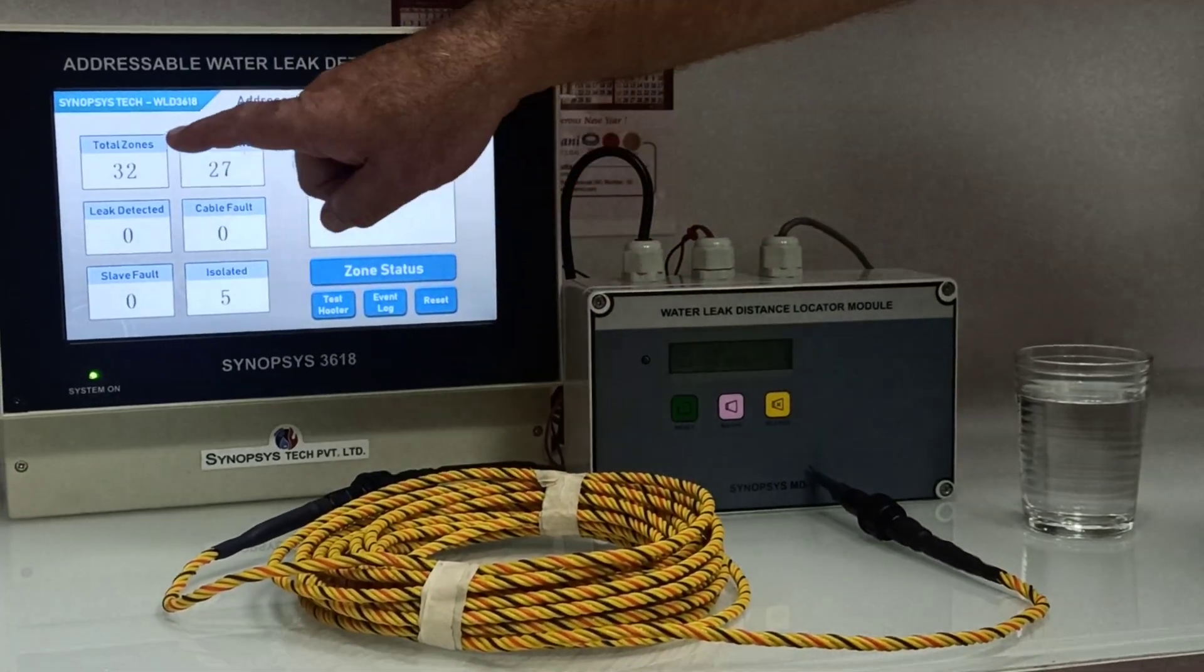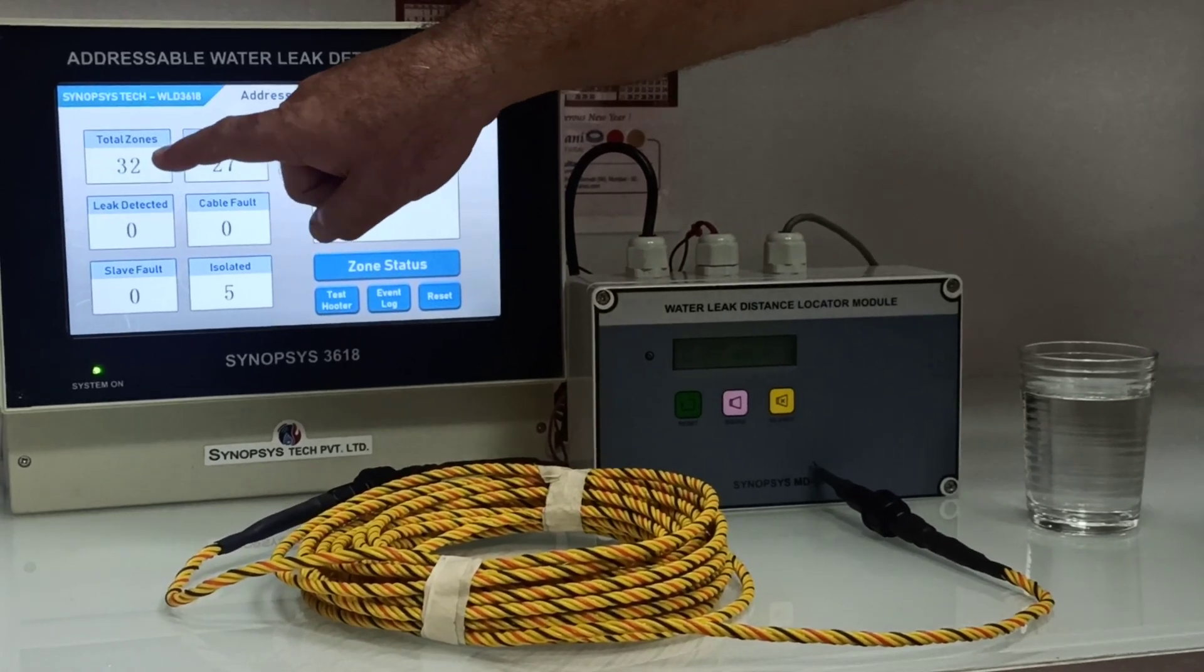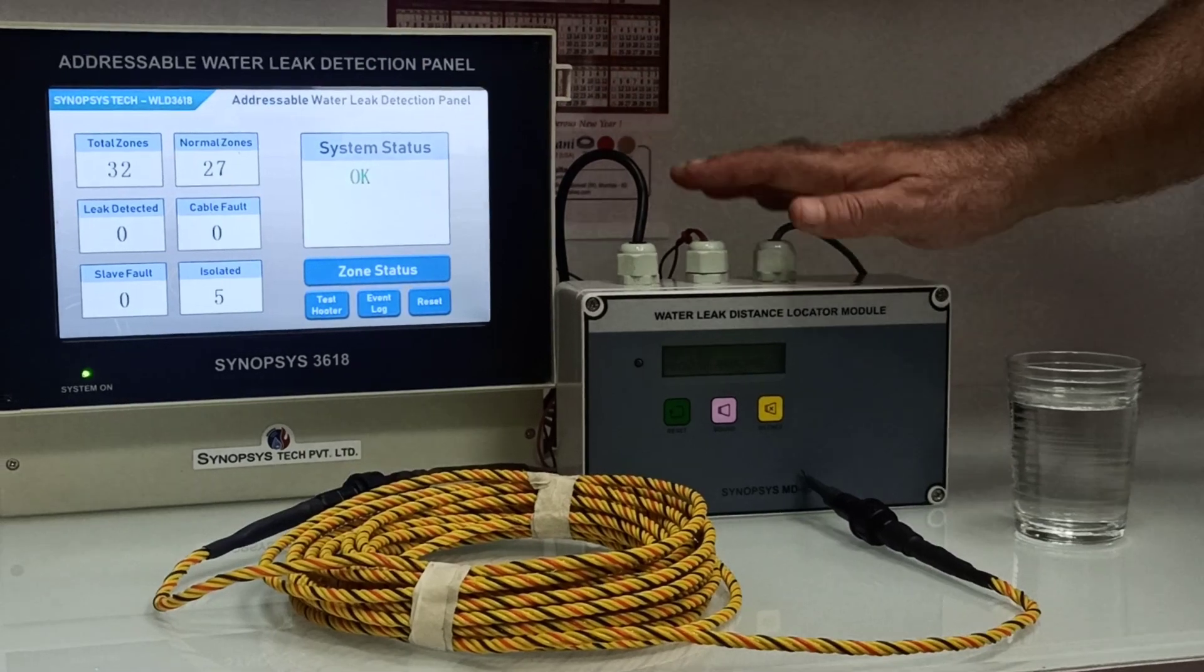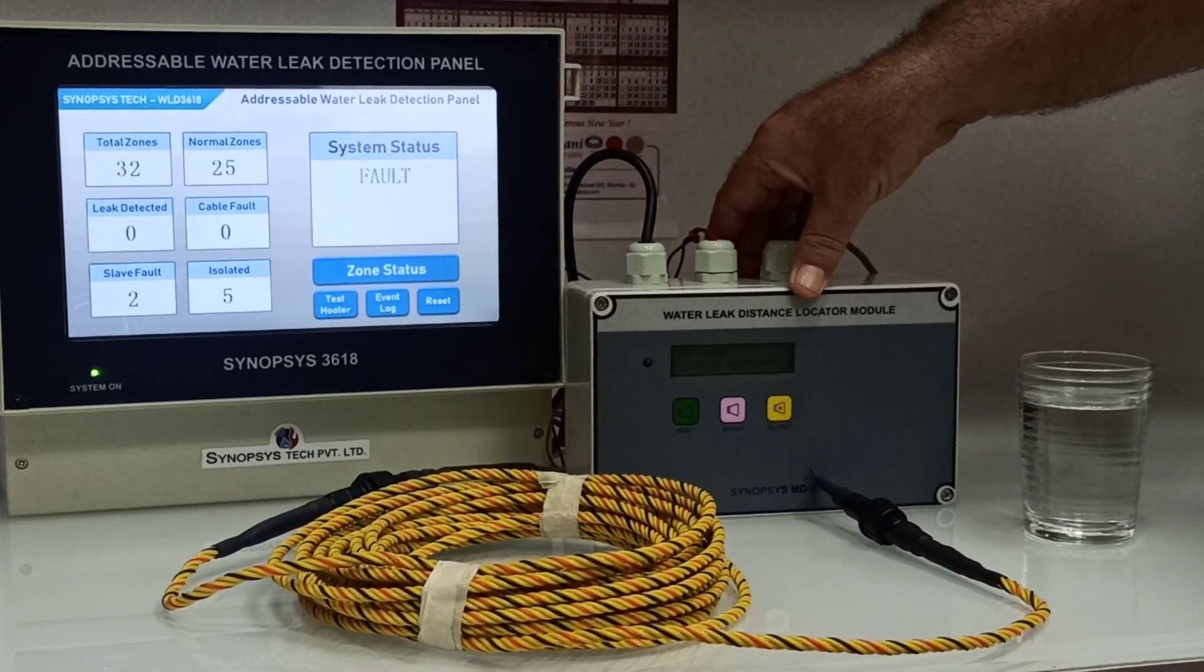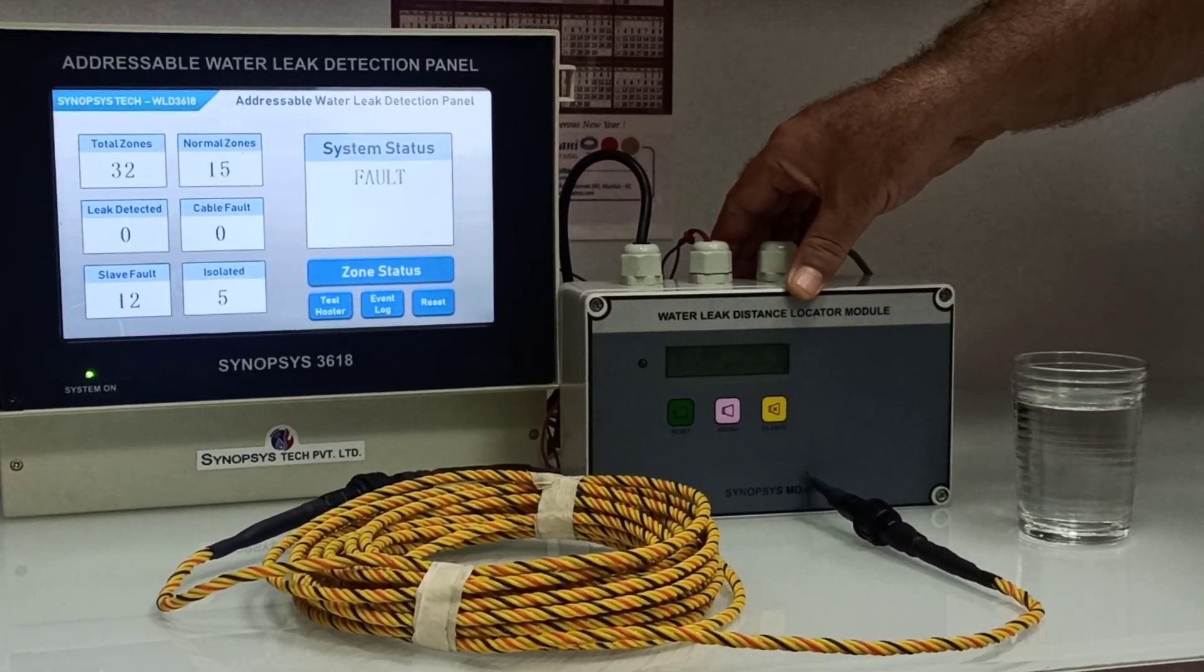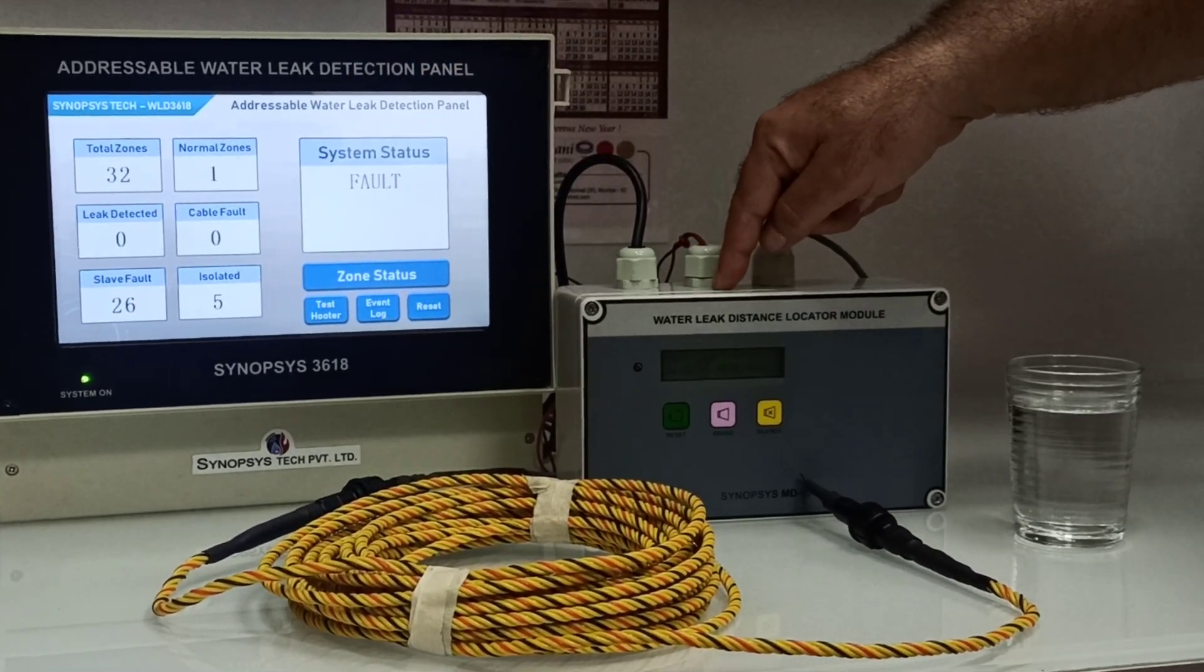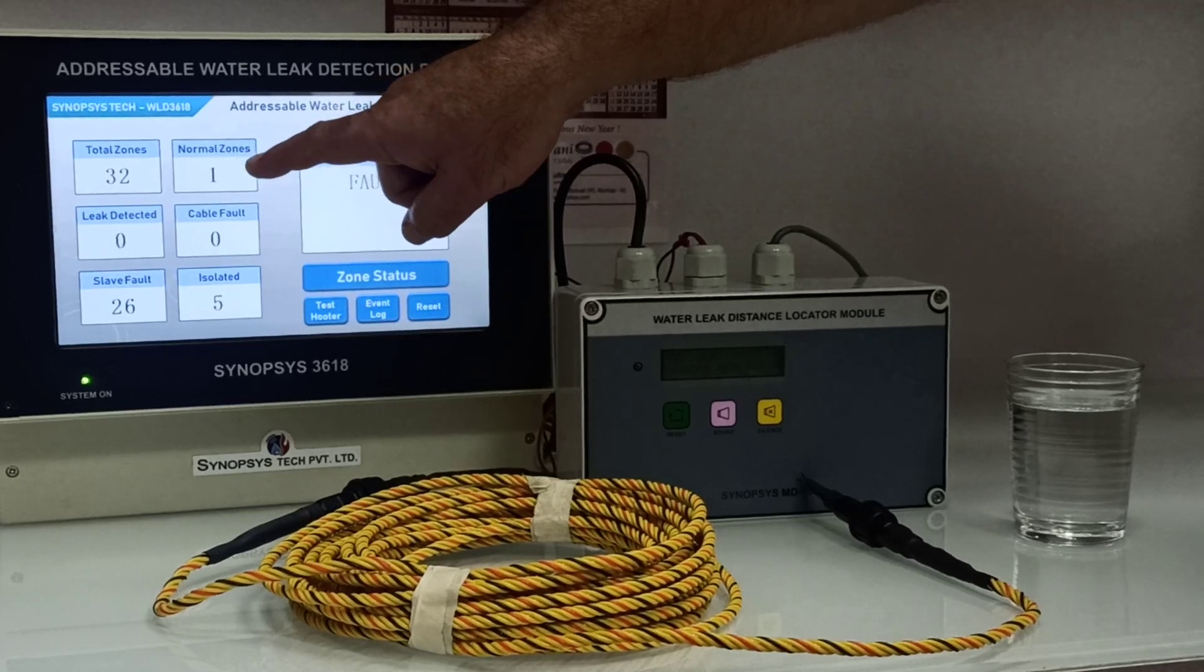The home screen will show total number of zones. In this case what we have selected is 32 zones - that is the 32 SIM modules we will be connecting. Then we have normal zones. Since only one SIM module is connected, normal zone is only one.